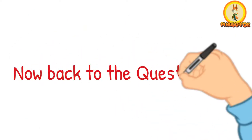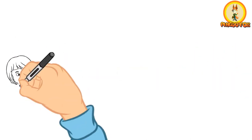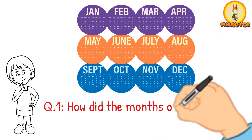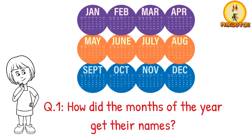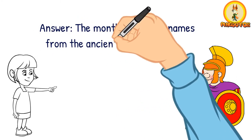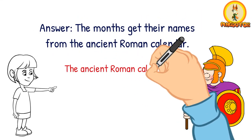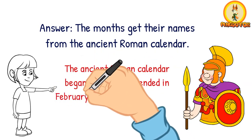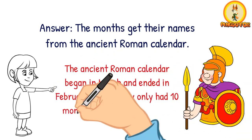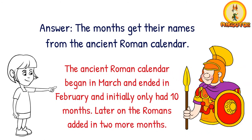Now back to question number 1: how did the months of the year get their names? The months get their names from the ancient Roman calendar. The ancient Roman calendar began in March and ended in February, and initially only had 10 months. Later on, the Romans added in two more months.